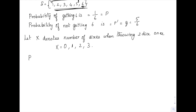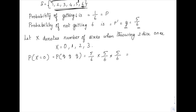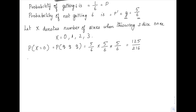Firstly, P(X = 0): we assume we didn't get any sixes at all, so the probability is q × q × q = (5/6) × (5/6) × (5/6), which equals 125/216.